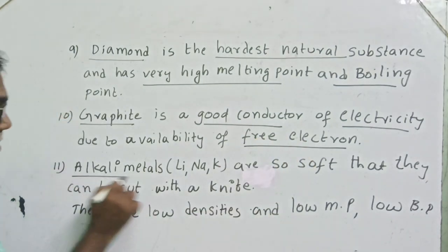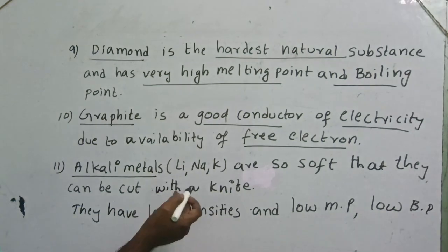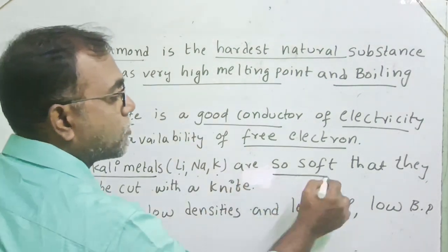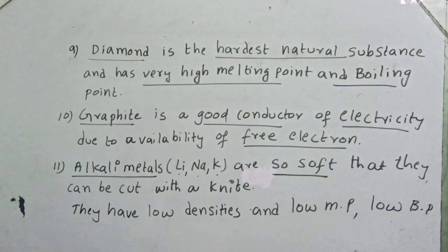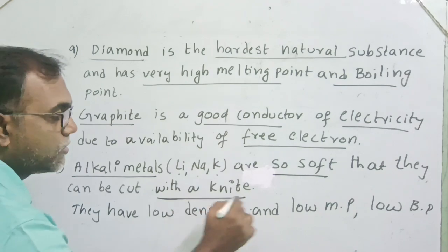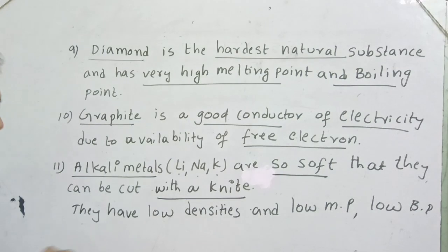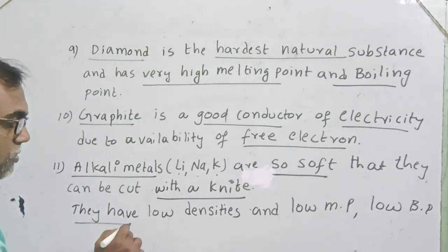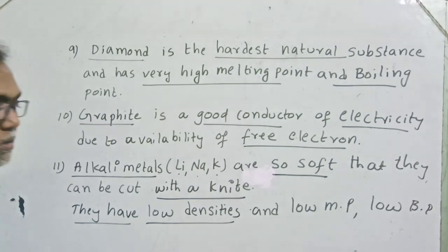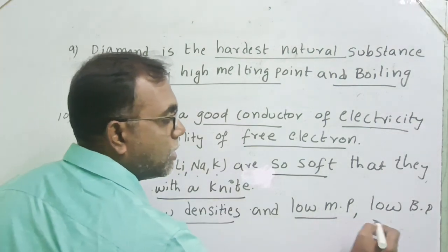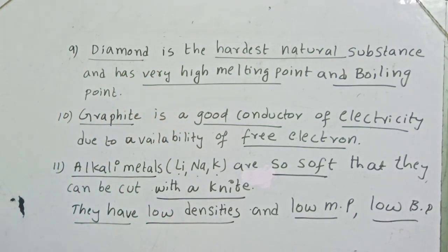Alkali metals — for example lithium, sodium, and potassium — are so soft that they can be cut with the help of a knife. These are soft metals. Alkali metals also have low densities, which means they float on the surface of water. They also have low melting point and low boiling point.